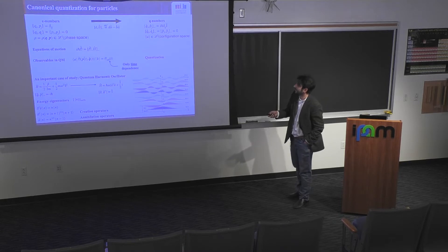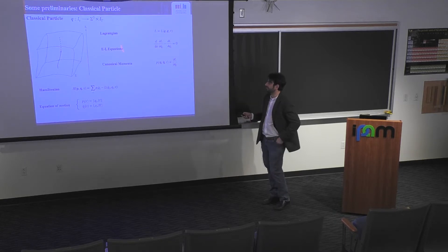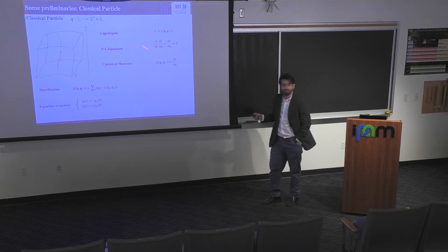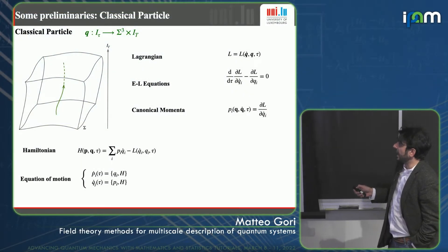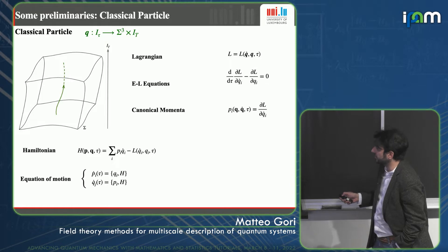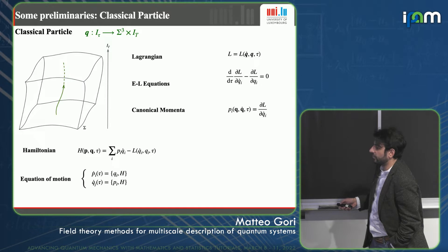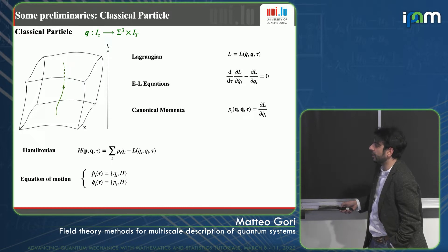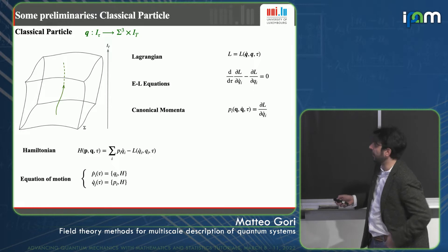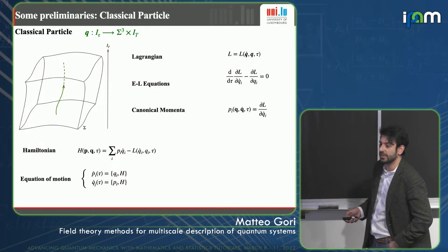For particles, starting from the least action principle, we can define a Lagrangian. The least action principle allows us to derive Euler-Lagrange equations — the equations of motion in coordinate space. From this, we derive canonical momenta. Then we perform a Legendre transform of the Lagrangian to obtain the Hamiltonian, and from the Hamiltonian we obtain a coupled pair of first-order differential equations in time, starting from a single second-order one.